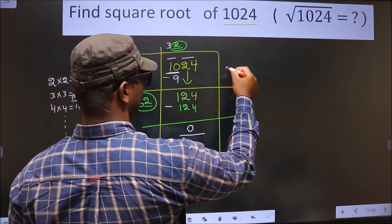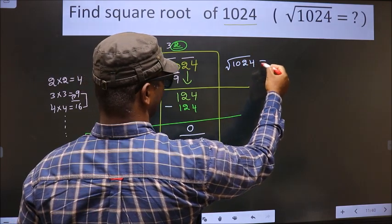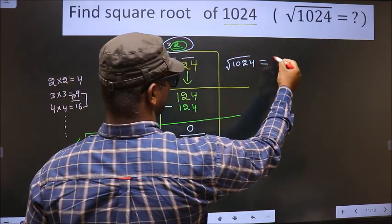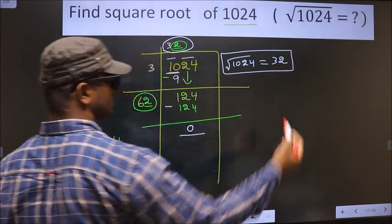And the square root of given number that is 1024 is this number that is 32. So this is our answer.